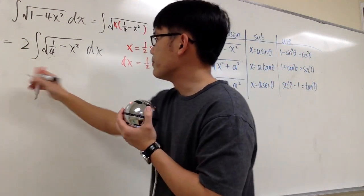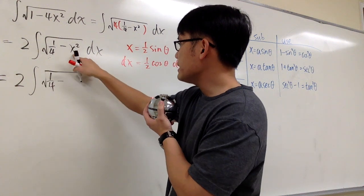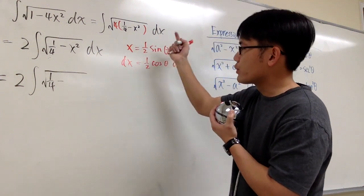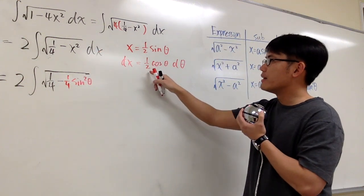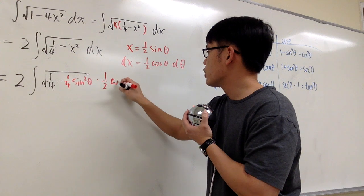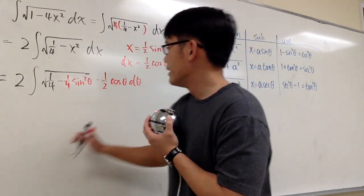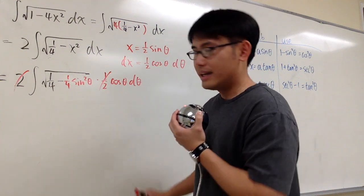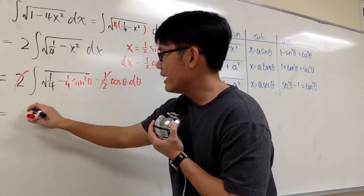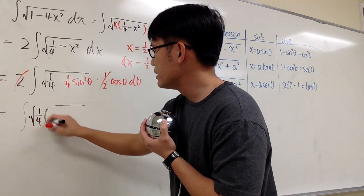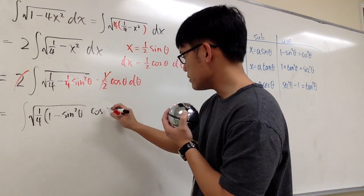Now let's continue. The 2 is still out front. Inside the square root we have 1/4 minus x squared. Substituting x = (1/2)sinθ, we square it: (1/2)² gives 1/4, and we get 1/4 minus (1/4)sin²θ. For the dx part, we multiply by (1/2)cosθ dθ. The 1/2 and the 2 cancel. We factor out the 1/4 inside the square root, leaving square root of (1/4)(1 minus sin²θ), times cosθ dθ.